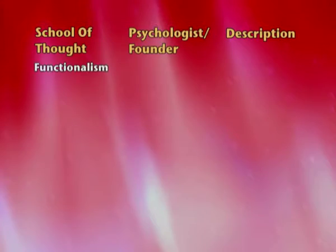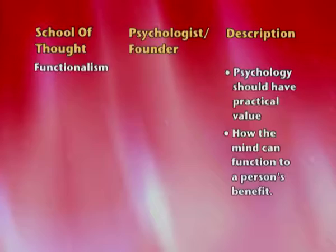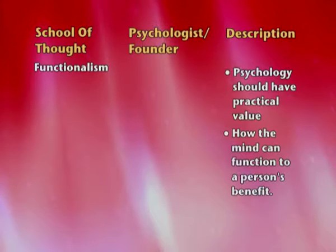The next school of thought is functionalism. While structuralism dealt with the structure of the mind, functionalism talks about the functions of the mind — what purpose consciousness serves, which is to adapt to and deal with the environment and people around us effectively. This school of thought developed in the USA, founded by William James.